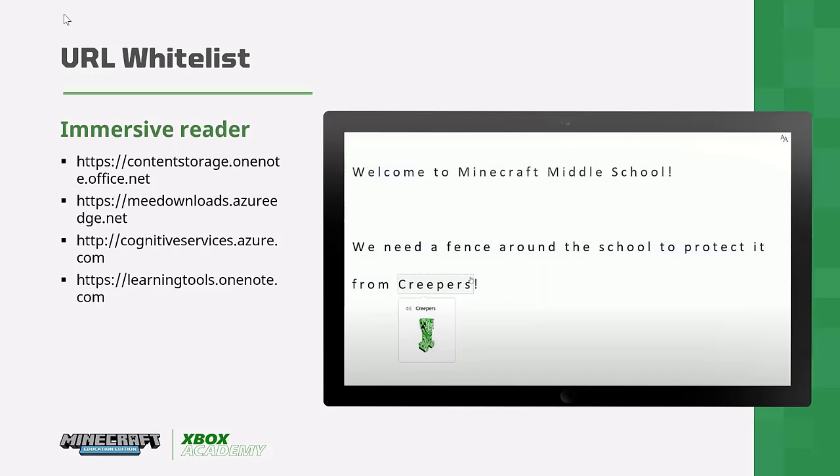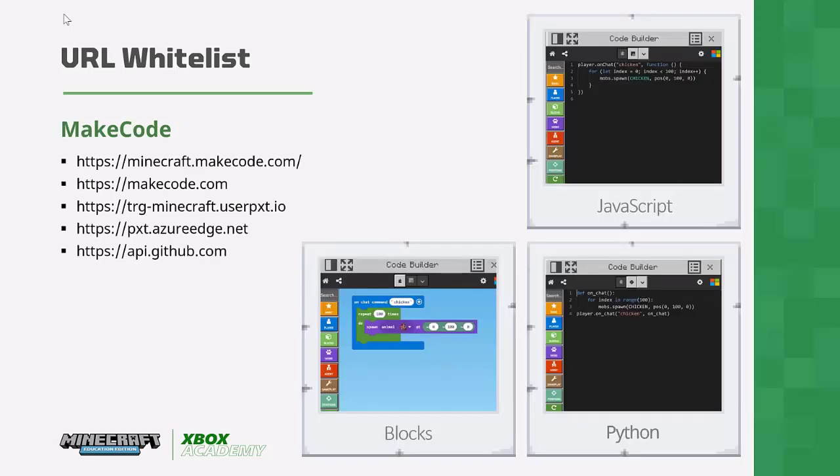A recently added feature is the Immersive Reader. Some of you may already be familiar with it from Word Online or OneNote Online. For those who aren't, the Immersive Reader is a powerful accessibility tool that allows students to translate text and identify key vocabulary. You'll need to allow those URLs to use the Immersive Reader within Minecraft. Minecraft also provides the ability to code using JavaScript, Python, and blocks similar to Scratch.